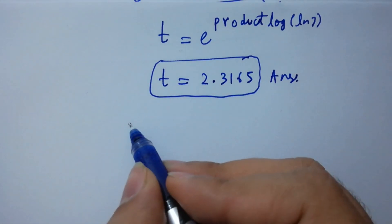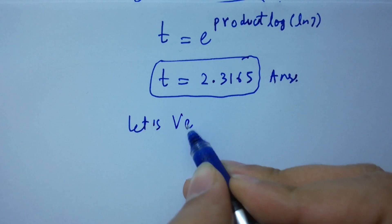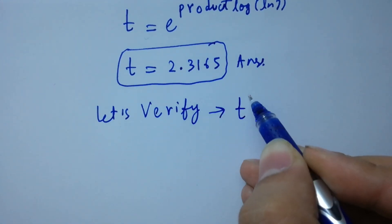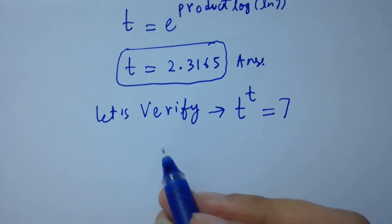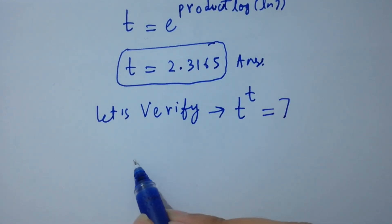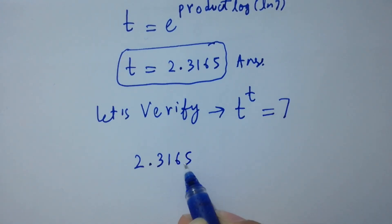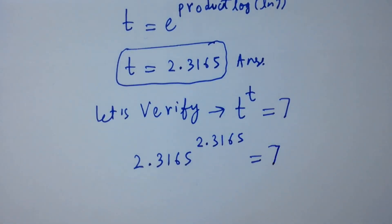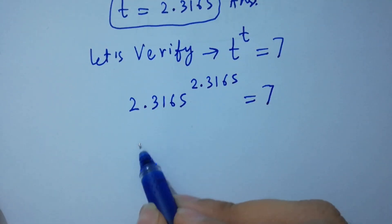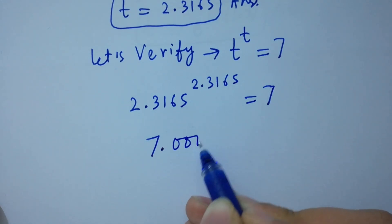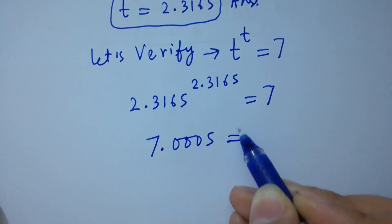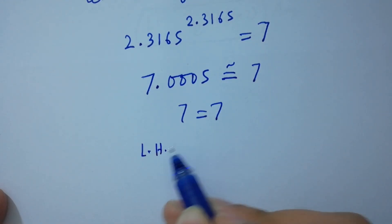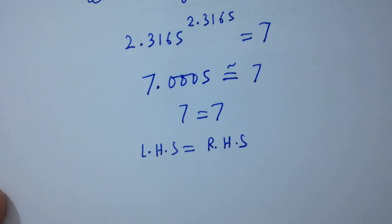Now let's verify: t to the power t equals 7. t is 2.3165, so 2.3165^2.3165 = 7.0005, which is approximately equal to 7. Left hand side equals right hand side.